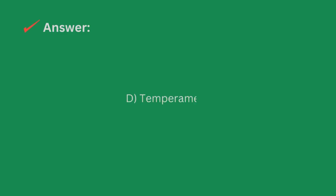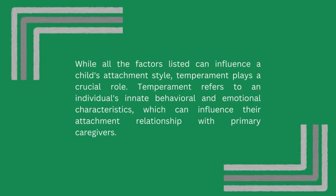The answer is D, temperament. While all the factors listed can influence a child's attachment style, temperament plays a crucial role. Temperament refers to an individual's innate behavioral and emotional characteristics, which can influence their attachment relationship with primary caregivers.